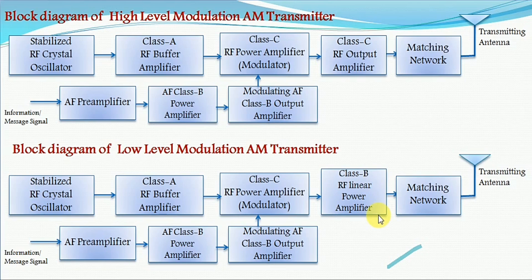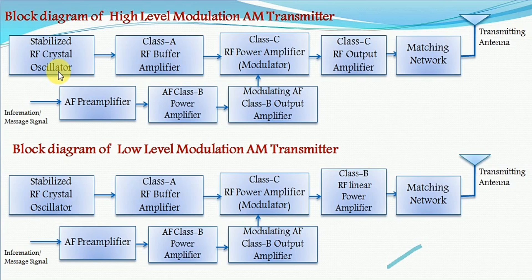The stabilized RF crystal oscillator, buffer amplifier of class A type, and the subsequent class C RF power amplifier (modulator) are common for both types of transmitters. The stabilized RF crystal oscillator is used to produce a constant frequency irrespective of changes in power supply voltages or temperature of the components in the circuit, and it produces a stable high frequency signal to perform the modulation.